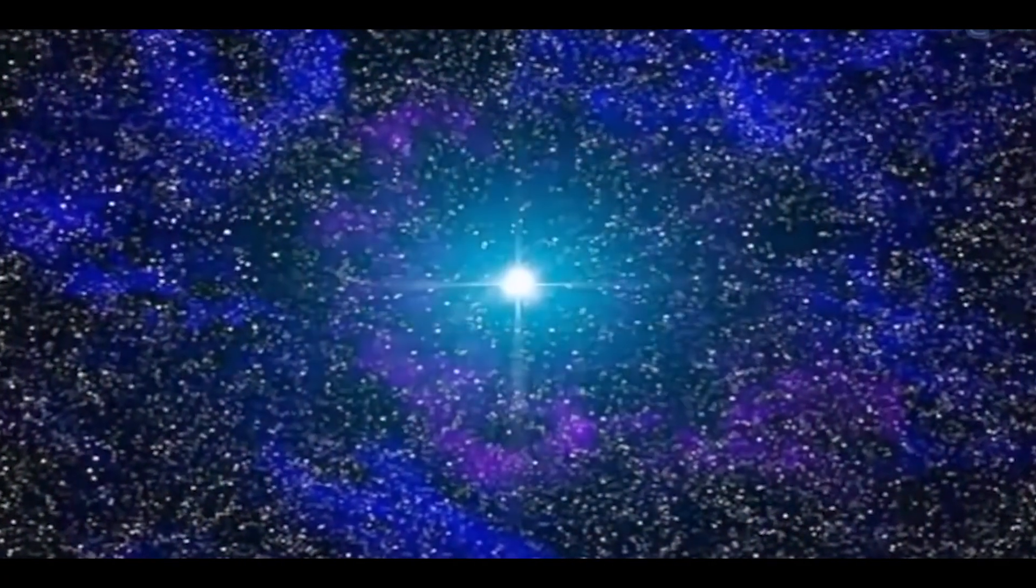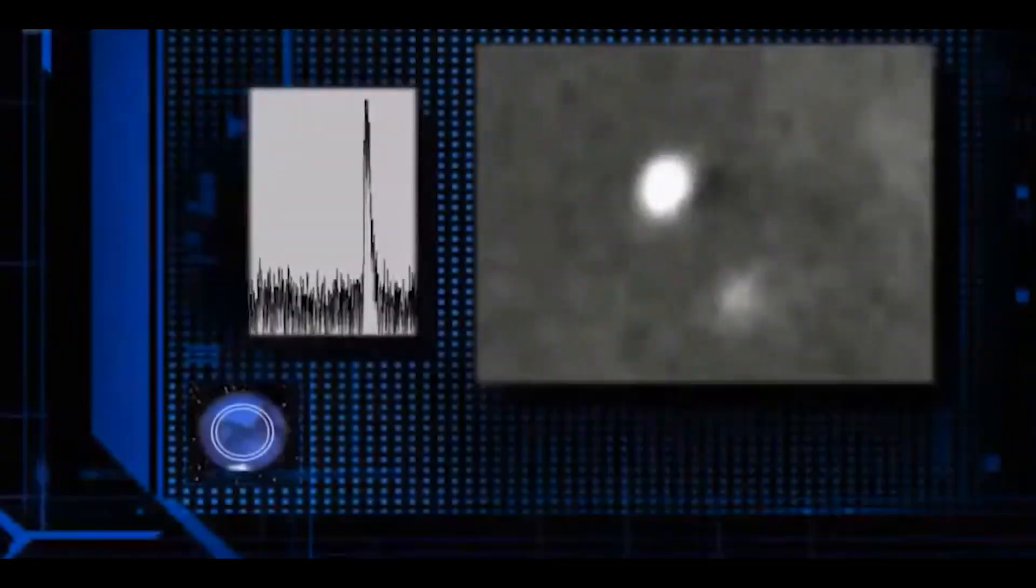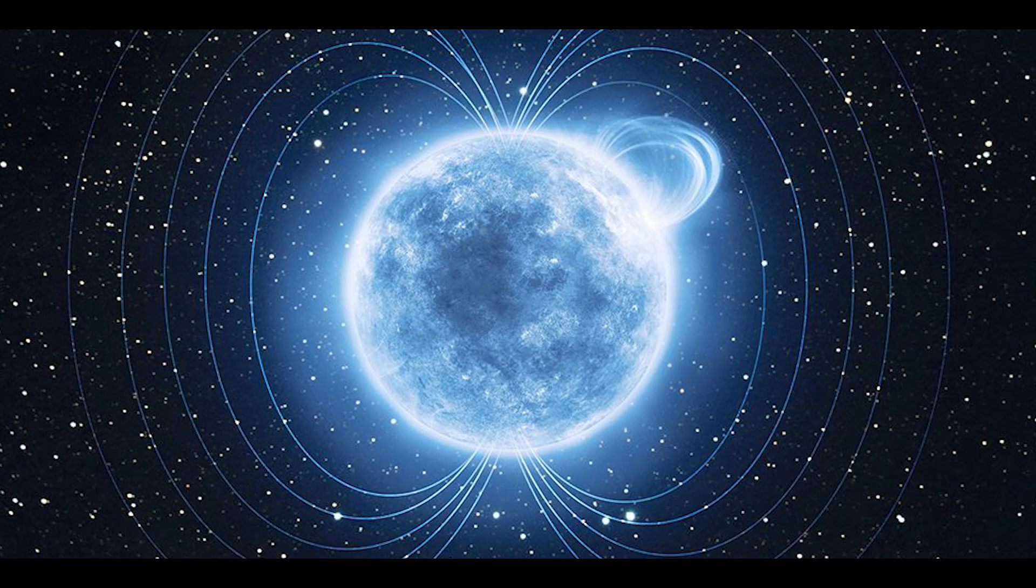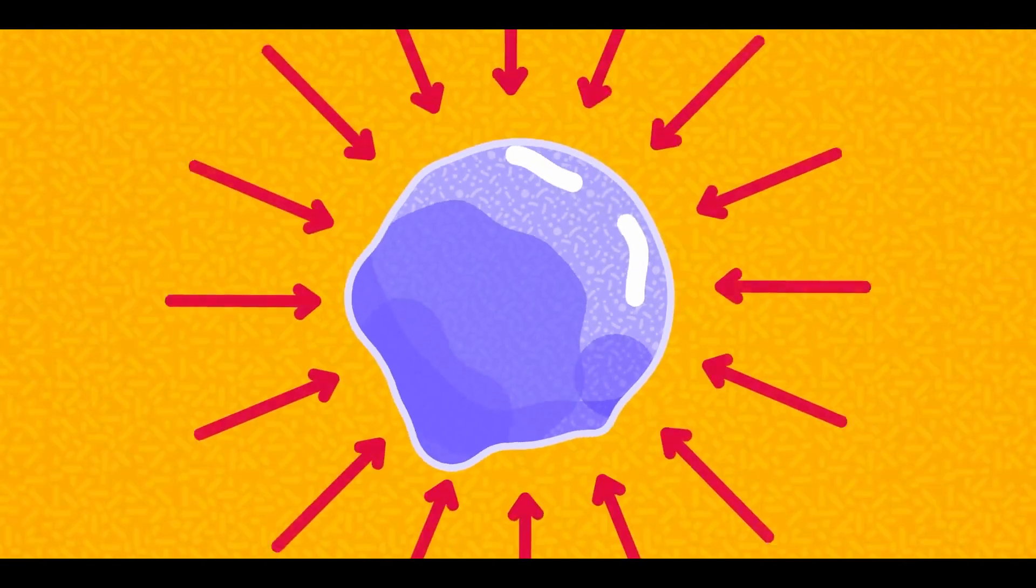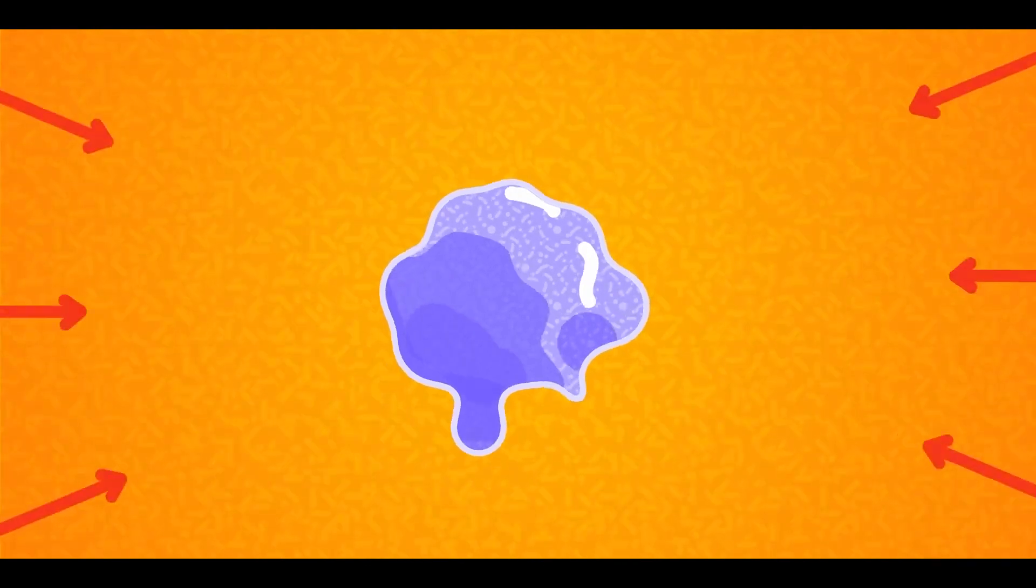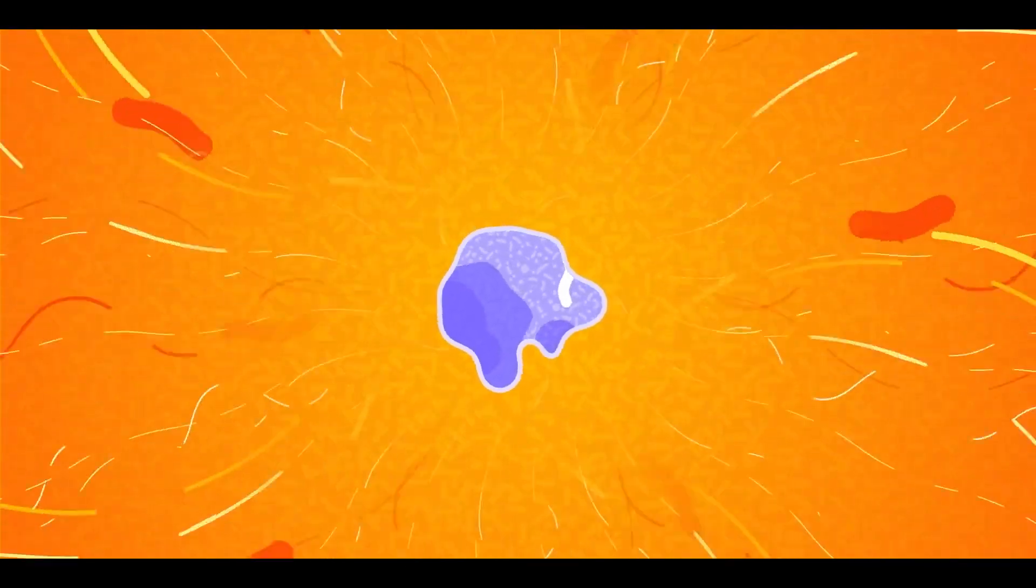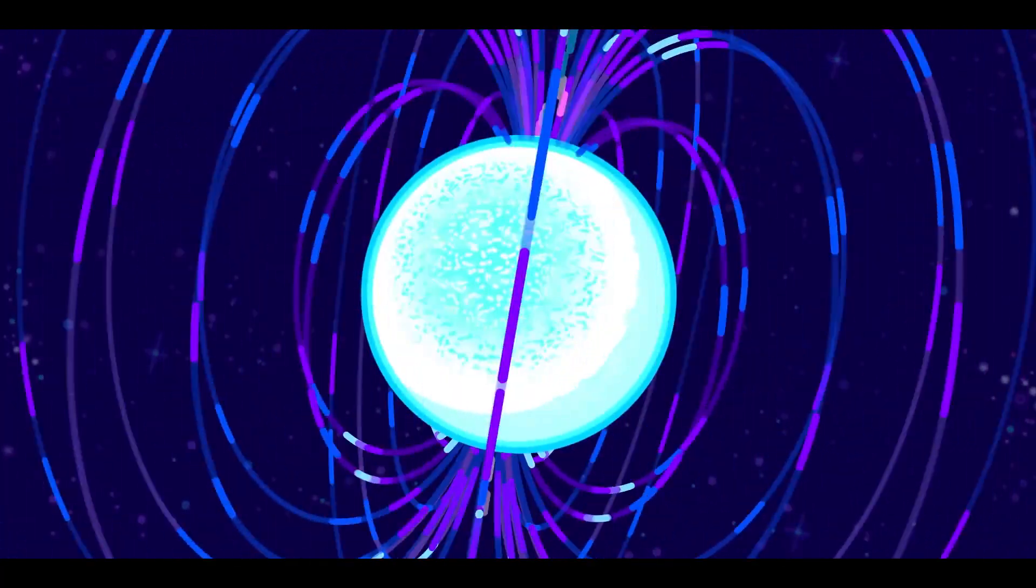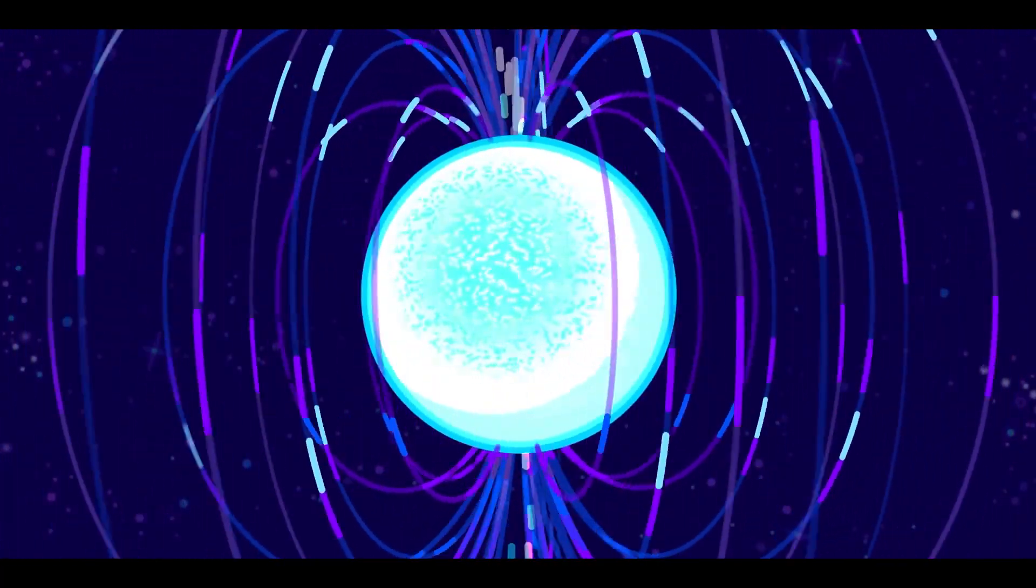Pulsars also undergo much more drastic period changes, called glitches, in which the period increases suddenly and then decreases gradually. Starquakes, or sudden cracks in a star's iron crust, can cause glitches. There are others that are caused by the interaction between the crust and the fluid interior.